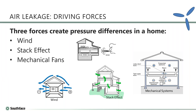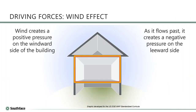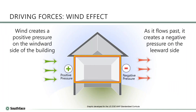The wind blows on one side of the house and creates a positive pressure as it's pushing. As it flows past the house, it creates a low-pressure zone — essentially, a negative pressure. So the outside is at higher pressure than the inside on the windward side, and the inside is at higher pressure on the leeward side. The wind is an obvious driving force; some places have a fair amount of it, some do not, and it obviously varies with the weather.